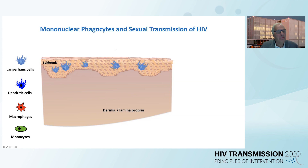Good afternoon, everyone. Today we're going to talk about mononuclear phagocytes and sexual transmission of HIV, focusing on the mononuclear phagocytes in the anogenital epithelium and their interaction with HIV.